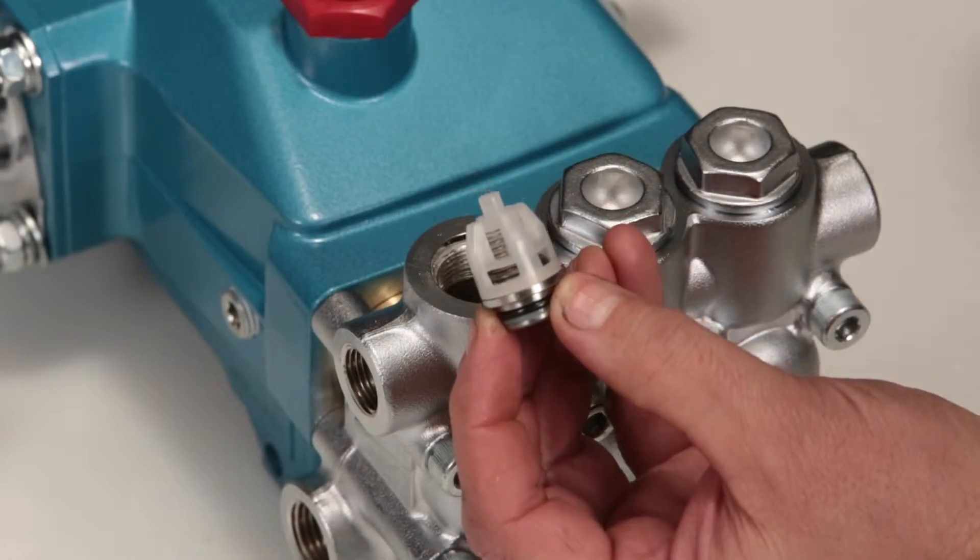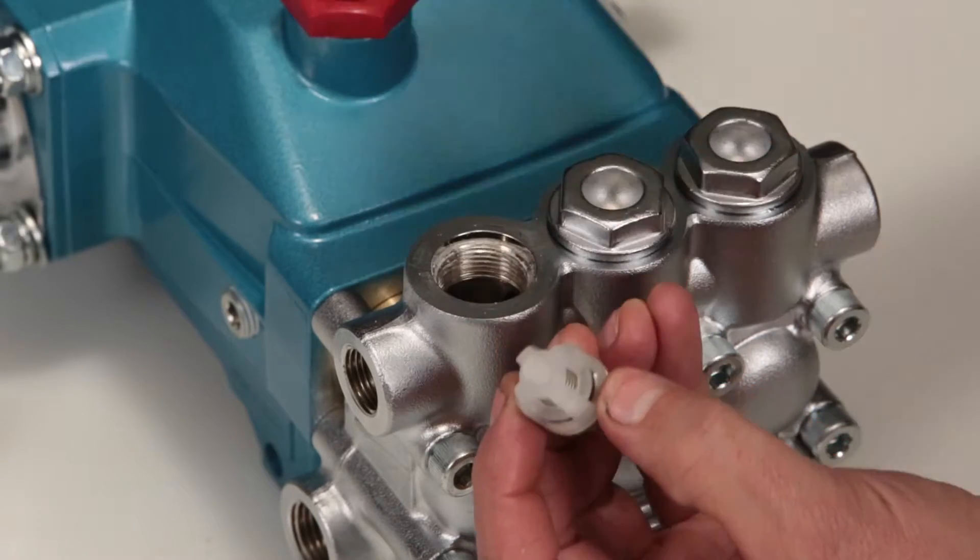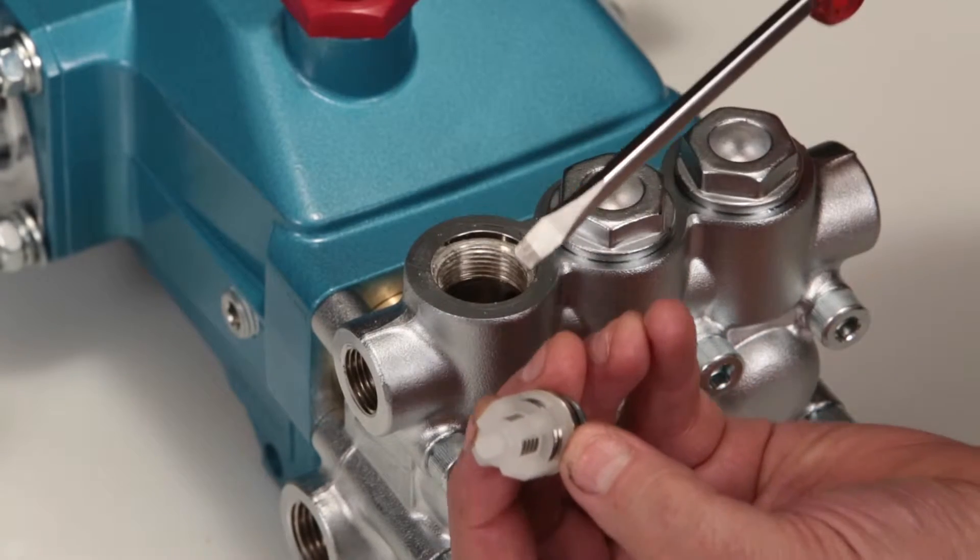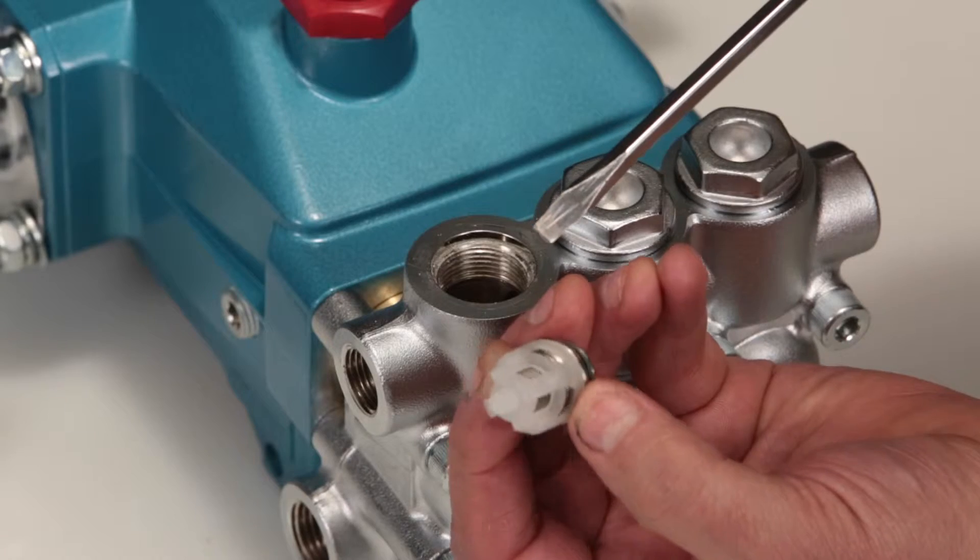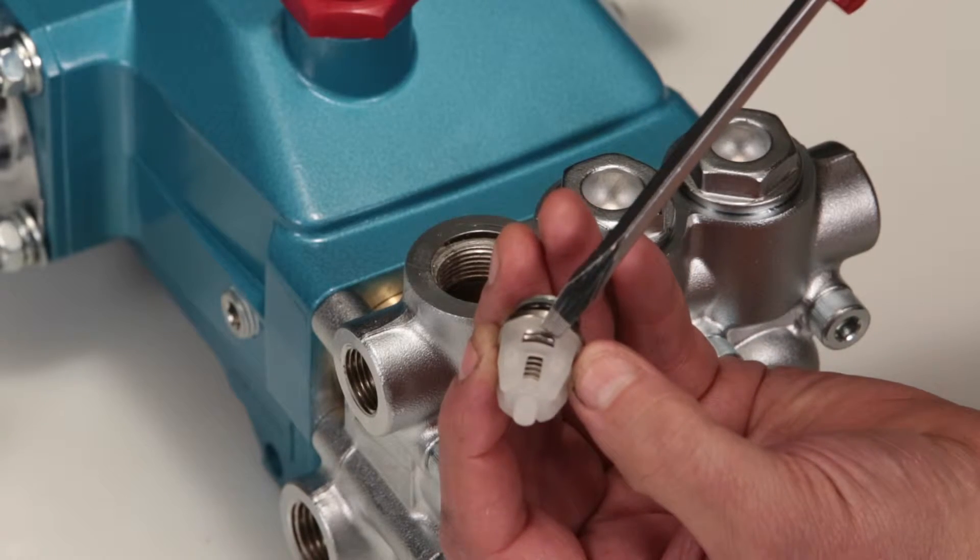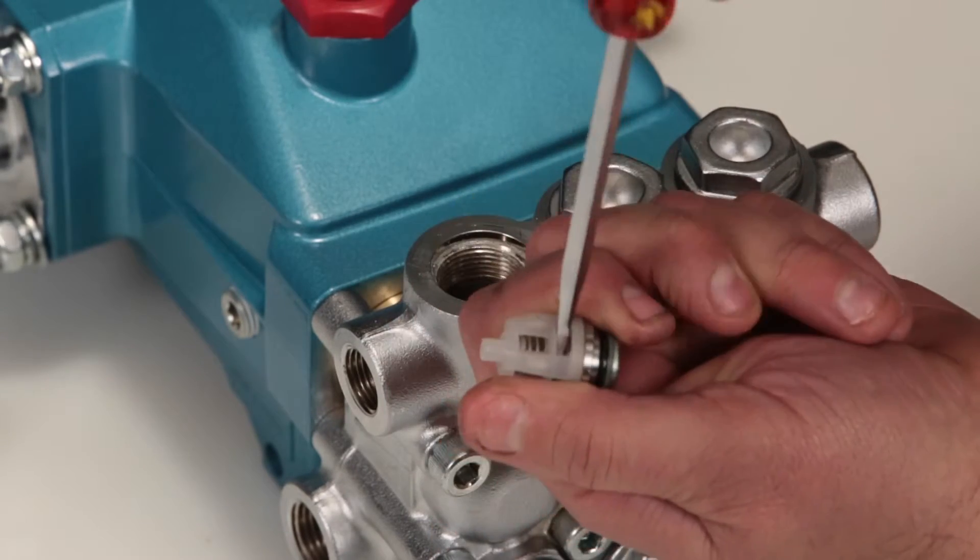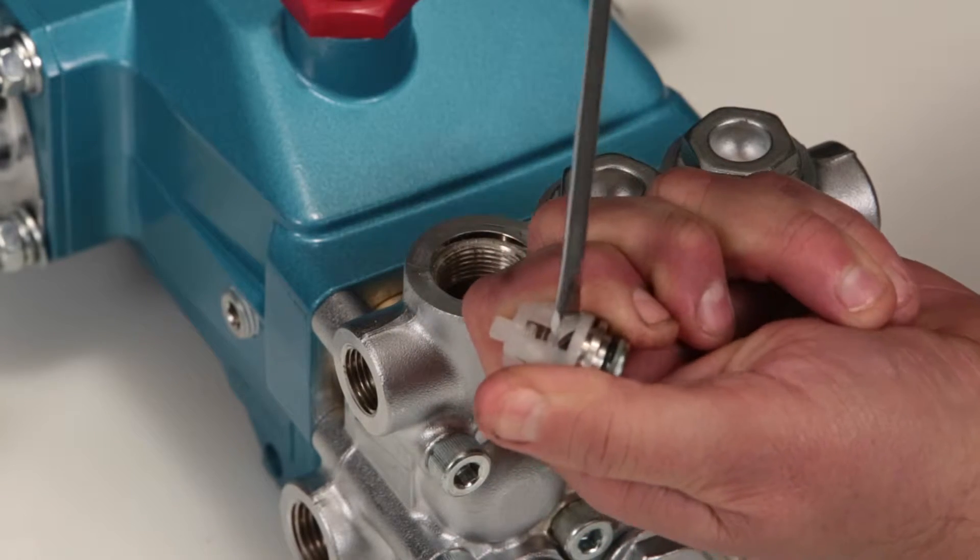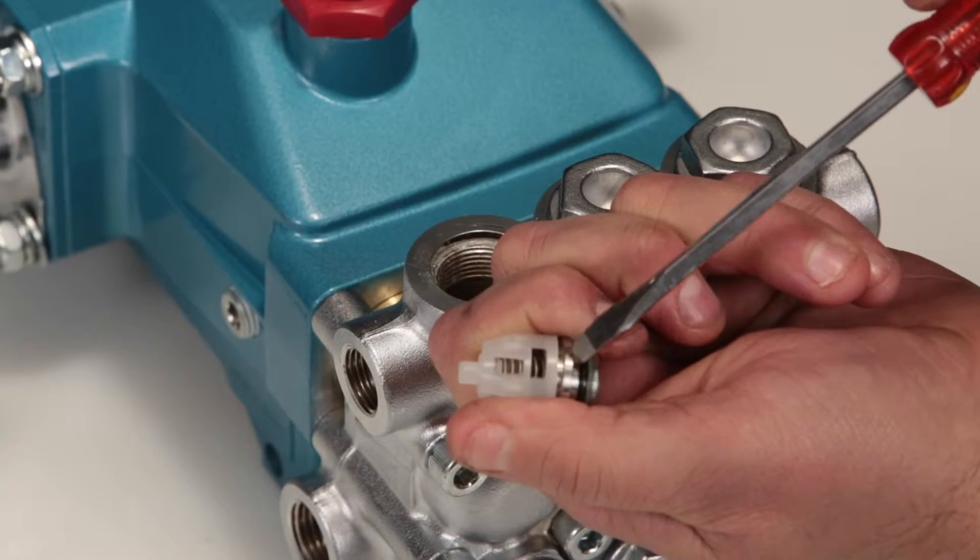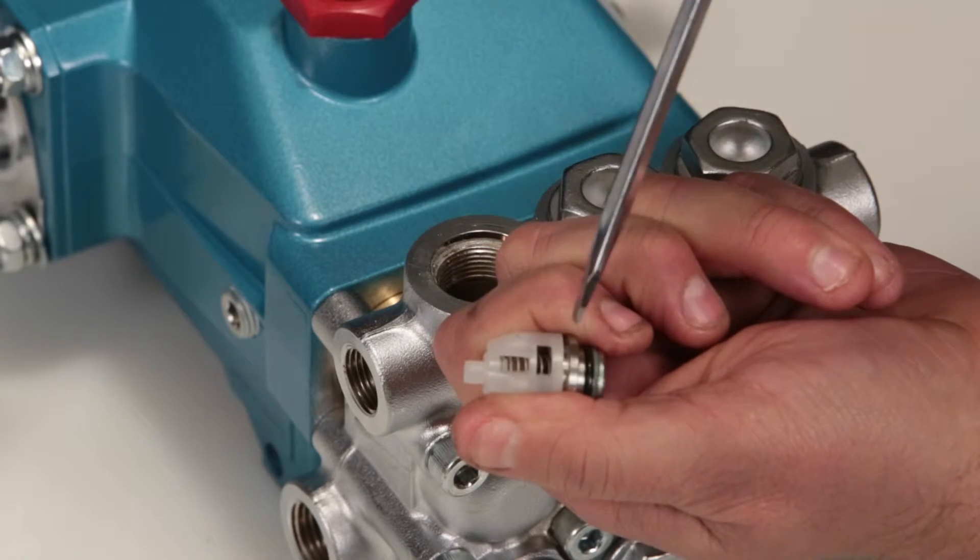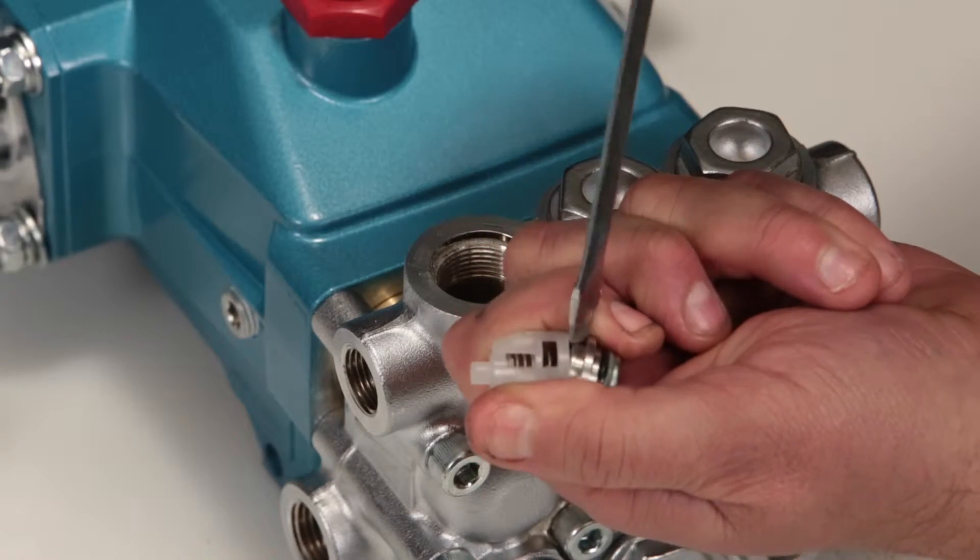If the valves are going to be reused, serviced, or inspected, the assembly can be dismantled. Start by inserting a flat-tip screwdriver through the spring retainer just above the valve and twist to create a small gap between the valve retainer and valve seat. Place flat-tip screwdriver in the gap and twist to completely separate.